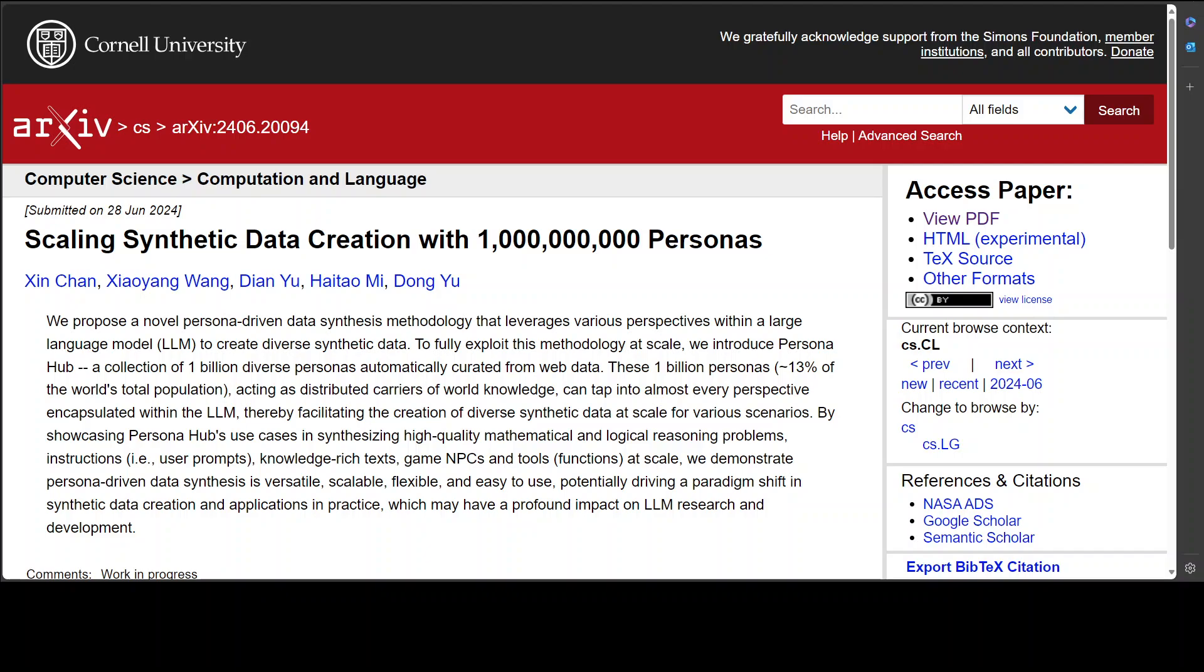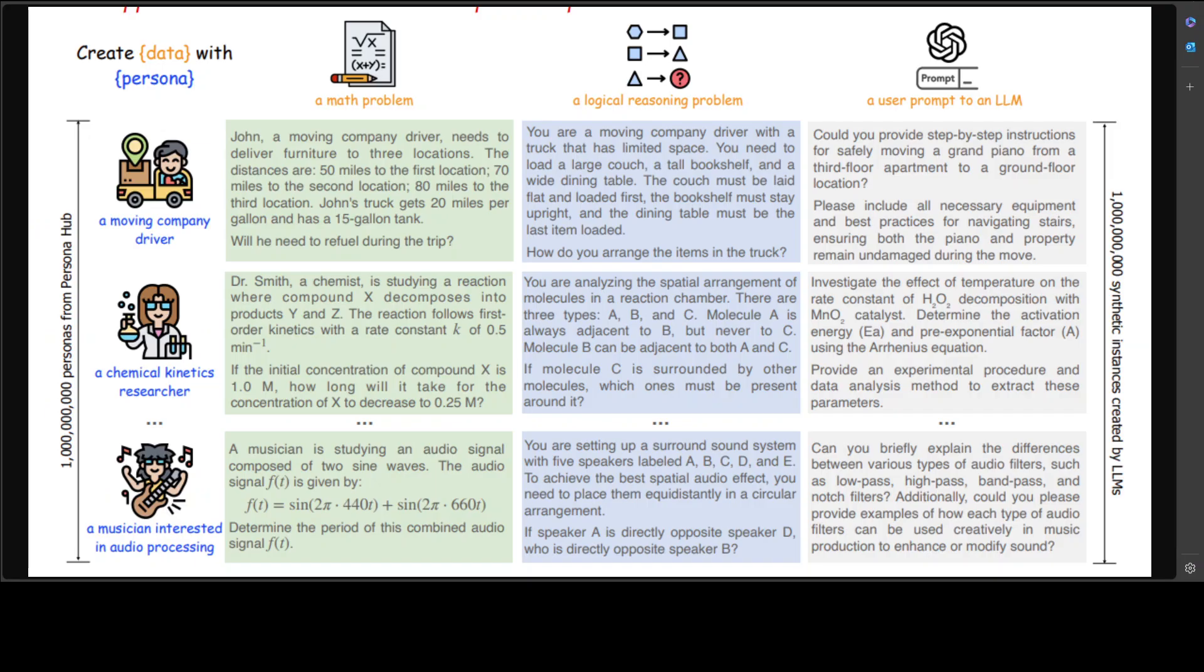When I say a lot, it means more than 1 billion diverse personas to facilitate the creation of diverse synthetic data for different scenarios, and we will also look at some of the examples such as this one.